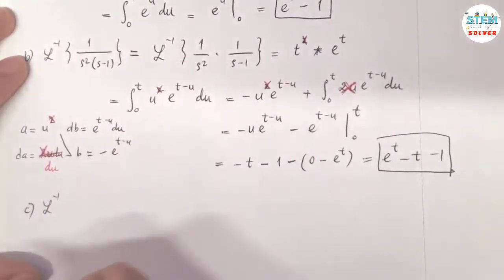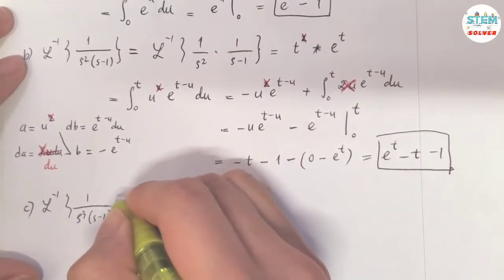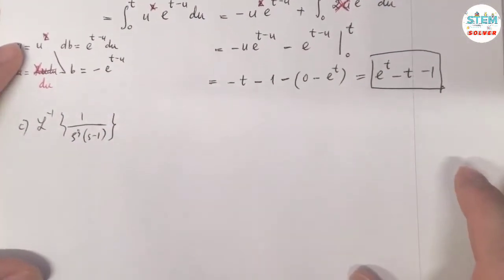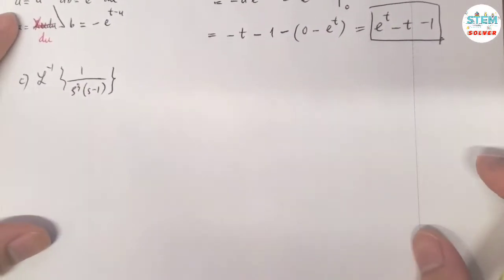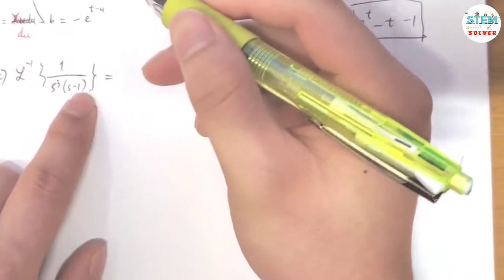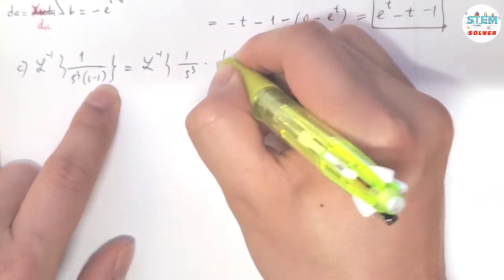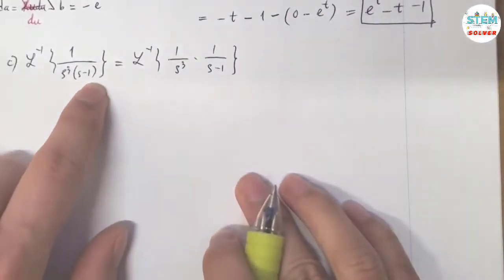And part C is asking us to find the Laplace transform of 1 over x cubed times x minus 1. Alright, so let me pull this up a little bit. All the way up. Alright. So for this problem, again, we are going to use the convolution method. So let me rewrite it as 1 over x cubed times 1 over x minus 1.